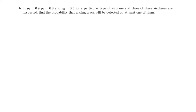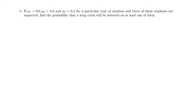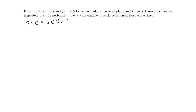Part B gives us values for P1, P2, and P3, so we can work out the probability of detecting the crack in the wing as the product 0.9 times 0.8 times 0.5, which comes out to be 0.36.